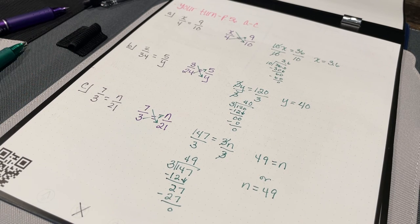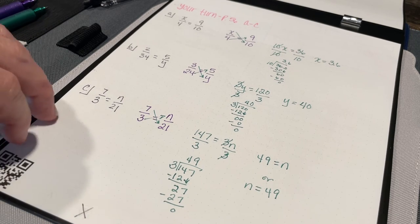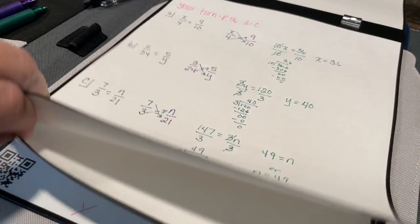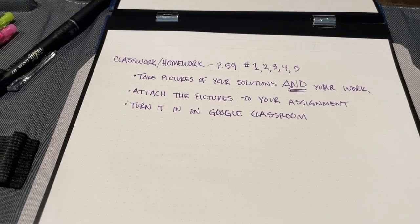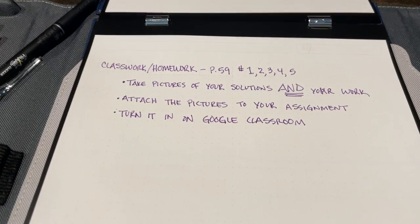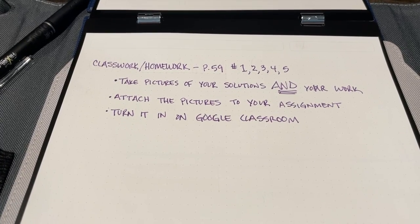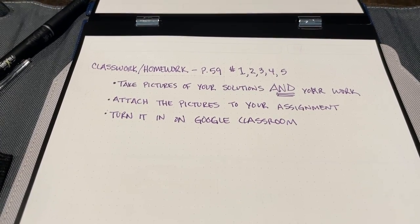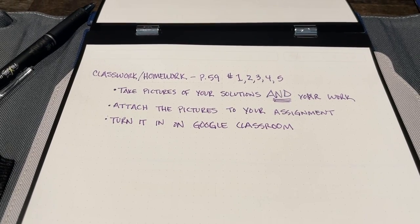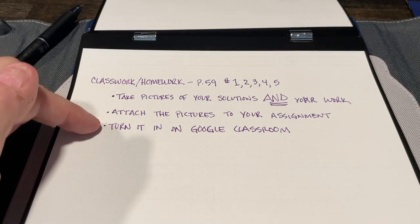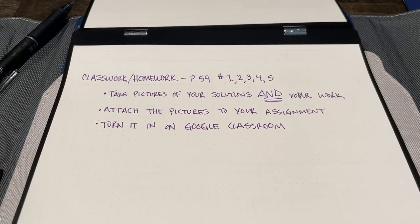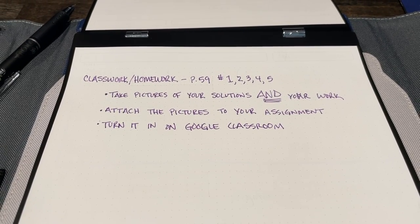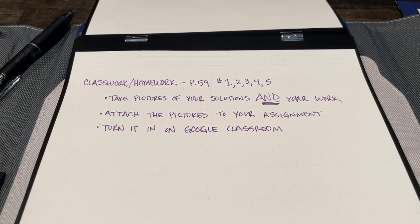So now that you've had a chance to practice on your own, you've checked your work with your peers, perhaps you've shared out with the class, I want you on that page for classwork, depending on how much time you have, slash homework. I want you to work on page 59, questions 1, 2, 3, 4, and 5. So we're just practicing this idea of cross products. And I know you know this, but I just want to point it out: take pictures of your solutions and show your work. Attach the pictures to your assignment and then turn it in on Google Classroom. And I will see you shortly.